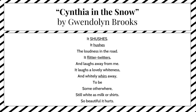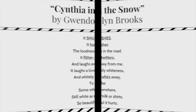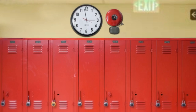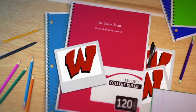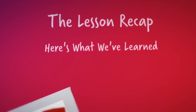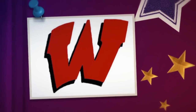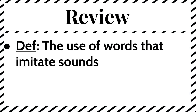The fourth line with the hyphenated word 'flitter-twitters,' and the seventh line with the word 'whirls.' All of those are examples of what snow would sound like. So to recap, onomatopoeia is the use of words that imitate sounds. Look for examples of it in poetry that you read throughout this unit. Happy hunting!